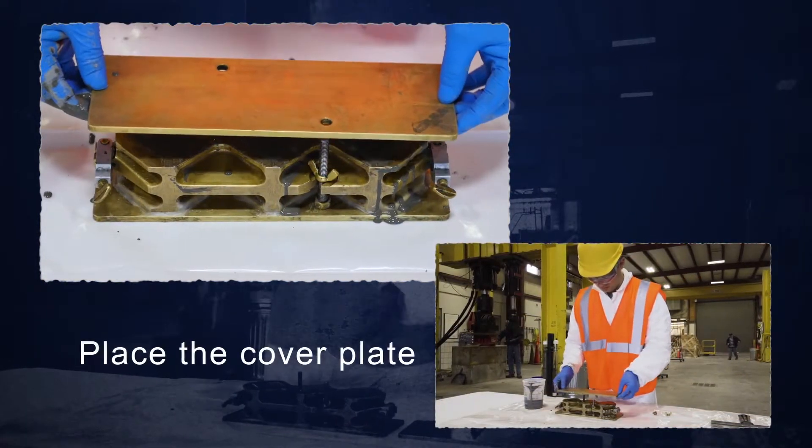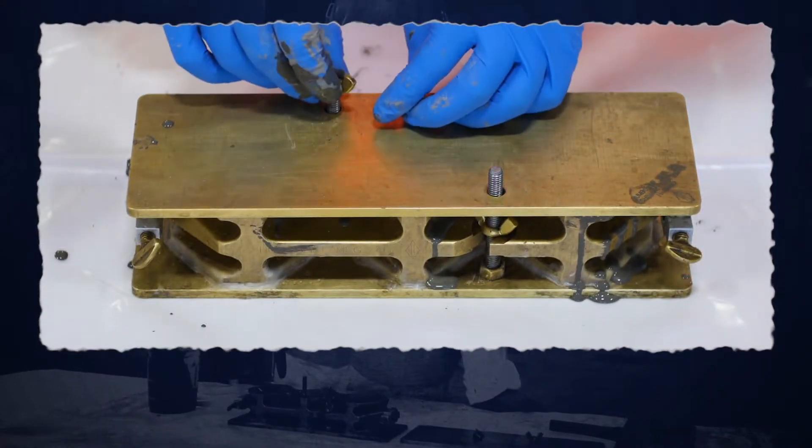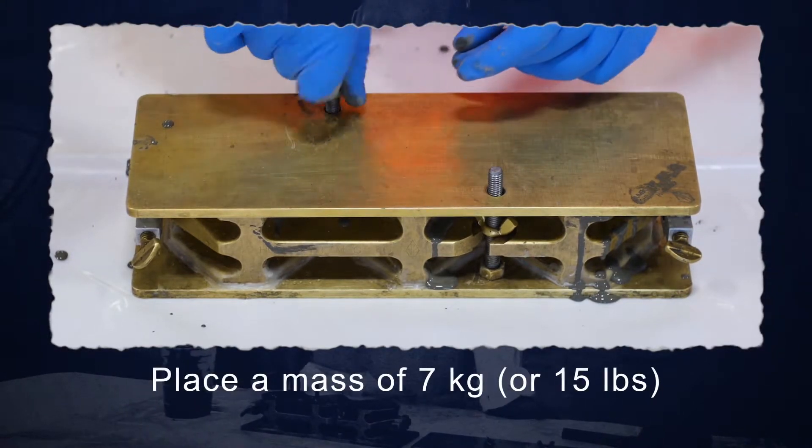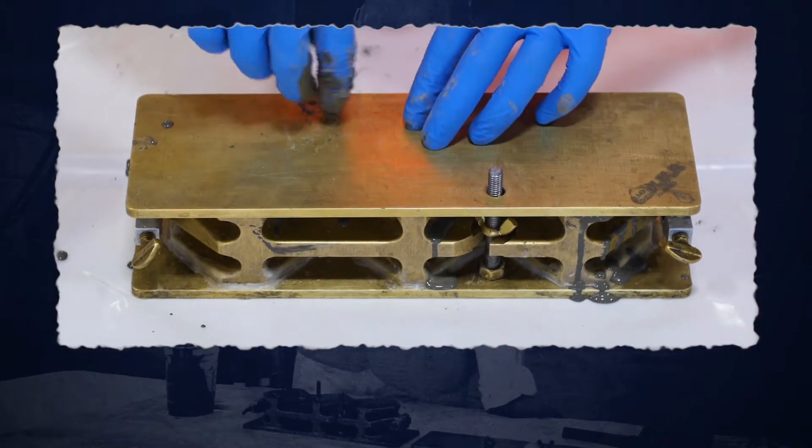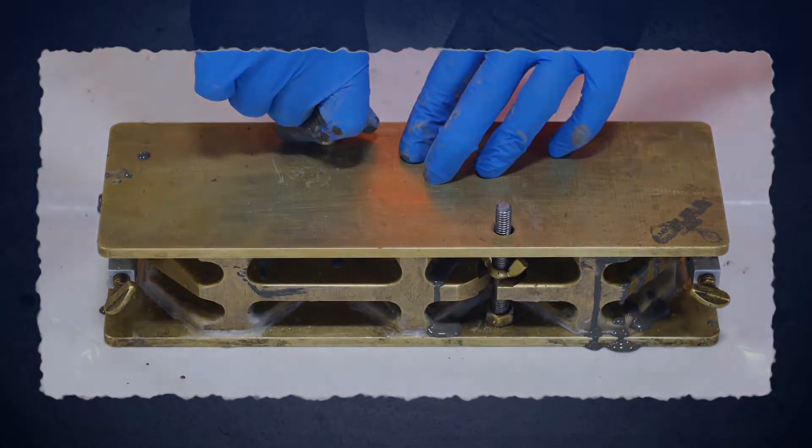Place the cover plate of the 3-gang mold, taking care that the grout or loose grains of sand do not prevent seating of the plate. Place a mass of 7 kilograms or 15 pounds on each cover plate or fix the cover plates with the molds with attached clamps.